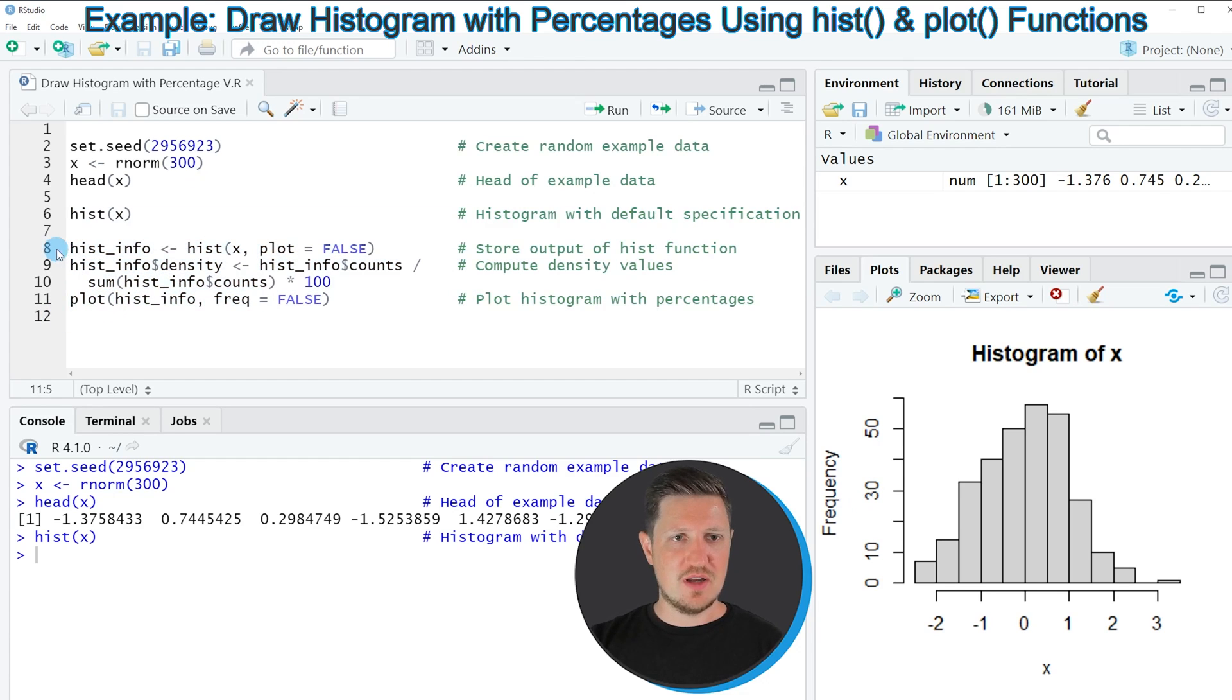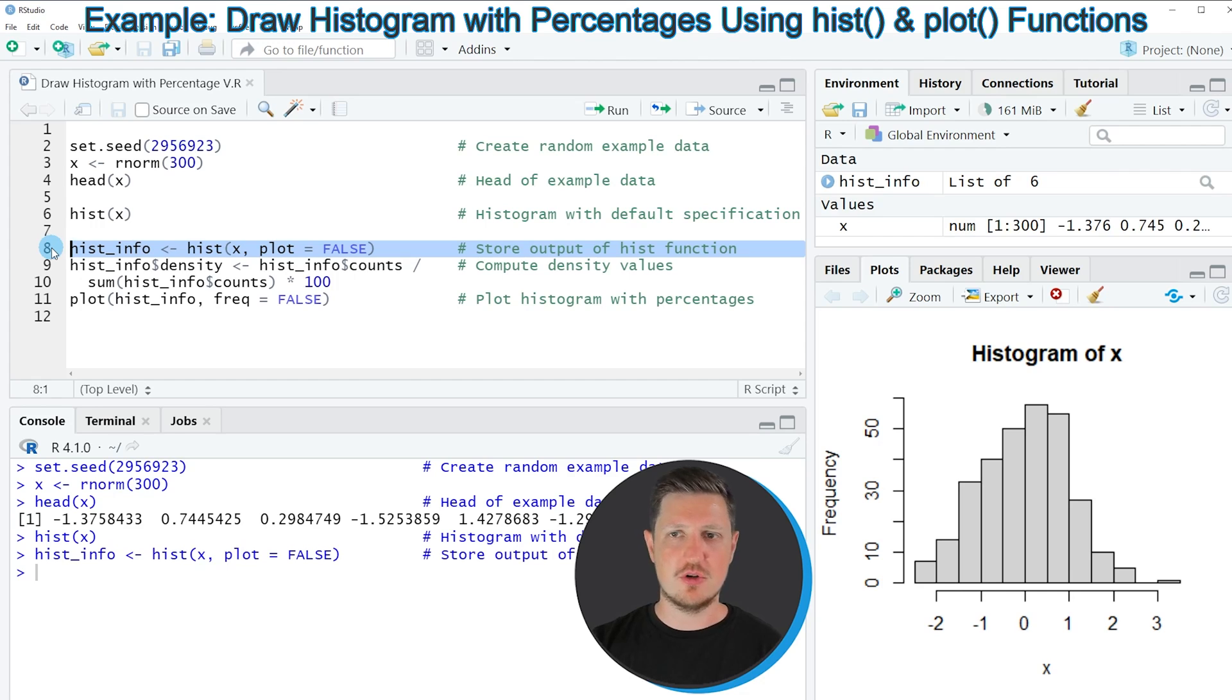So in line 8 of the code I'm first creating a data object which is containing information about our histogram. So if you run this line of code you can see at the top right of RStudio that a new data object is appearing which is called hist_info.